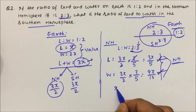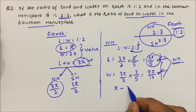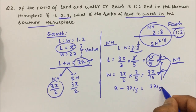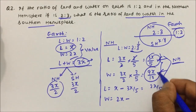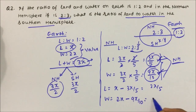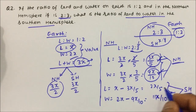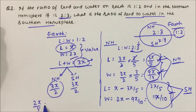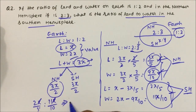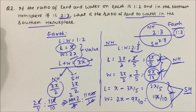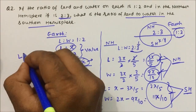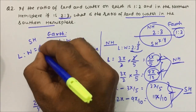The total land was x and in the northern hemisphere it is 3x by 5, so subtracting gives 5x minus 3x divided by 5, which is 2x by 5 — this is the amount of land in the southern hemisphere. The total water was 2x and in the northern hemisphere it is 9x by 10, so 20x minus 9x divided by 10 gives 11x by 10 — this is the water in the southern hemisphere. The ratio of land to water in the southern hemisphere is 2x by 5 to 11x by 10. Taking LCM of 10, x cancels, giving 4 is to 11. So land and water ratio in the southern hemisphere is 4 is to 11.